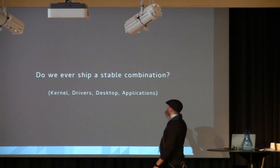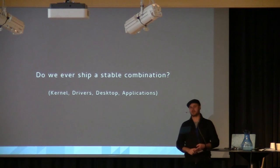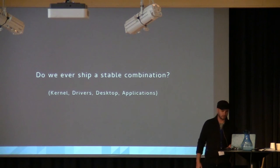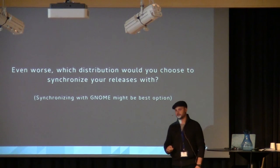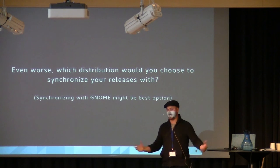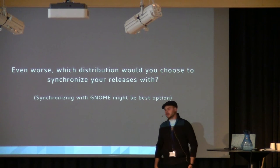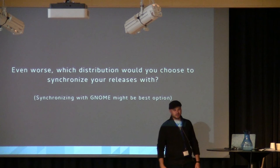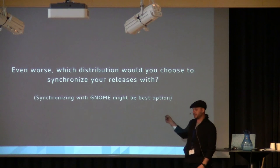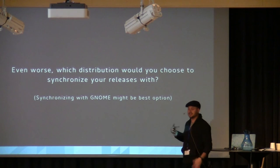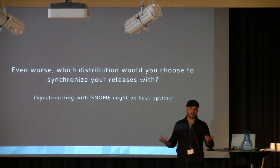So the question is: are we actually shipping a stable combination of kernel, drivers, desktop, and the actual end-user applications people want to be running? And even worse, if you were going to synchronize your release cycle with the distribution, which one would you choose? We have five main distributions, all on different schedules, releasing at different times. Synchronizing with the GNOME release cycle is probably the best option today, because at least distributions are somewhat motivated to be around the releasing of user-impacting software like GNOME.